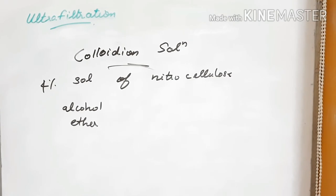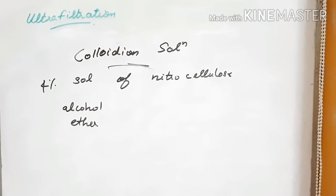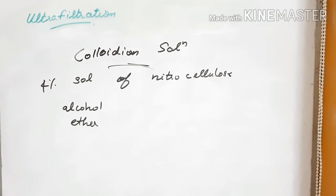Ultrafiltration is a slow process. To speed up the process, pressure or suction is applied. The colloidal particles remaining on the filter are then washed with fresh dispersion medium to obtain a pure colloidal solution.